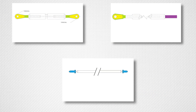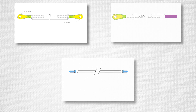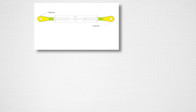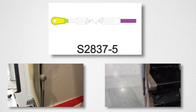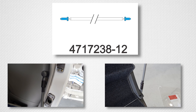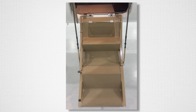There are three cables in use on these step assemblies. Each has a different combination of cable terminals. Cable S2814-4 has two clevis terminals. Cable S2837-5 has a clevis on one end and a stud on the other end. And Cable 4717-238-12 has two stud terminals.